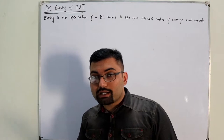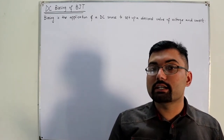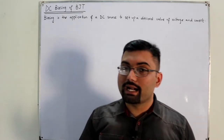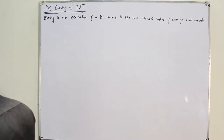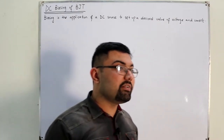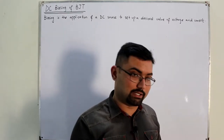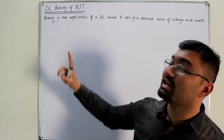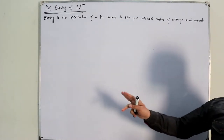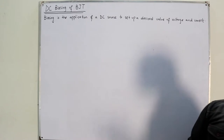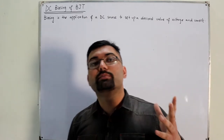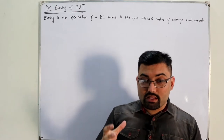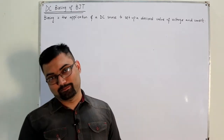The active mode is when the emitter-base junction is forward biased and the collector-base junction is reverse biased. In this mode the BJT acts as an amplifier — it increases the amplitude of the signal applied to it. That signal is an AC signal. The DC biasing is different from the AC signal: DC biasing is essentially turning on the device, giving the amplifier its power.